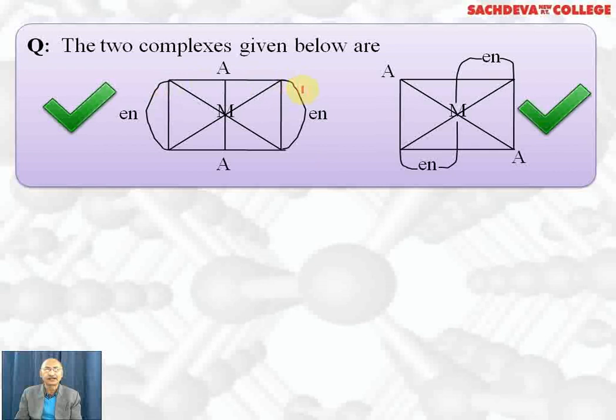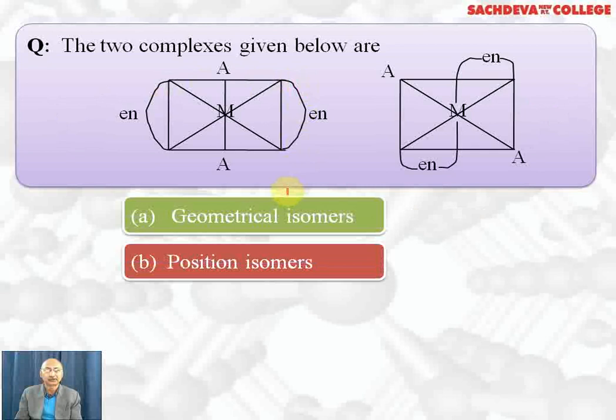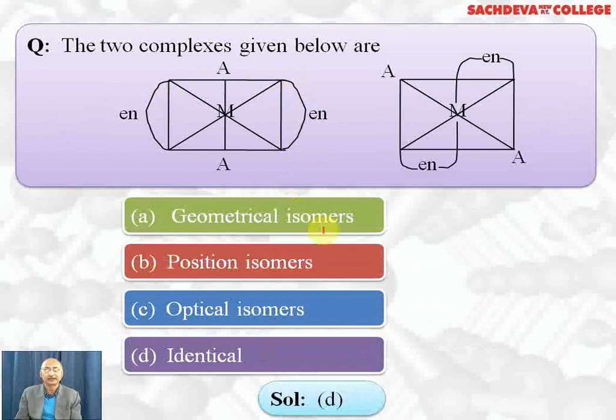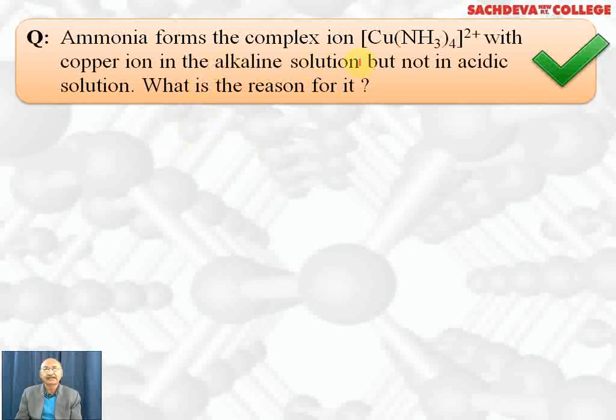Two complexes are given and we have to determine whether they show geometrical isomerism, position isomerism, optical isomerism, or are identical. The correct answer is that they are identical, because the 'en' ligands are on opposite sides and the 'A' ligands are also on opposite sides — so both structures are identical.